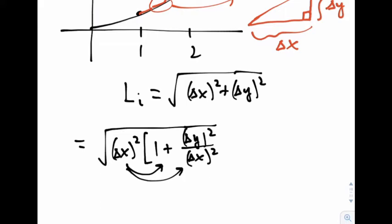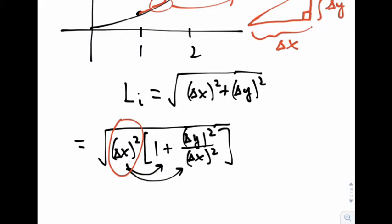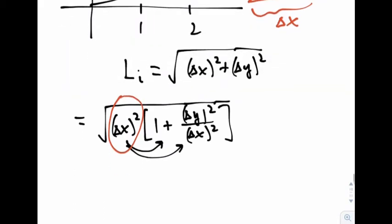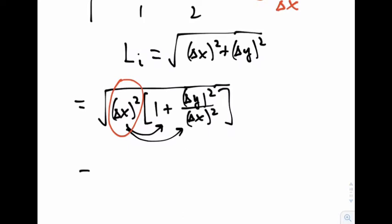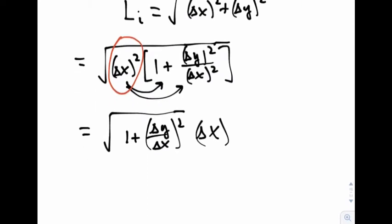Now, the reason we're doing this is because now we can actually take this square root or this delta x squared here out from underneath the radical. And that's going to give me the square root of 1 plus delta y over delta x, the quantity squared, and then a delta x on the outside of the radical. Because when I take the square root of the square, I get rid of them. So now we end up with this expression.